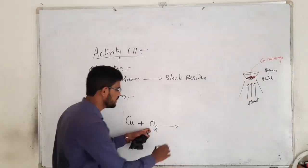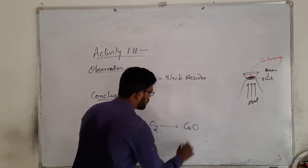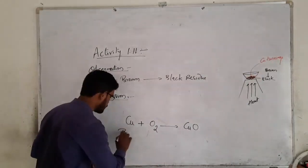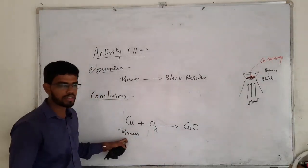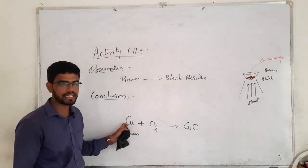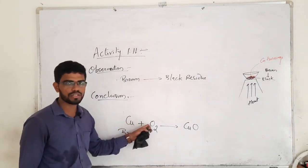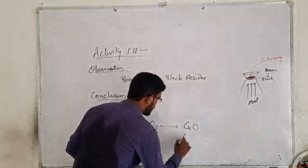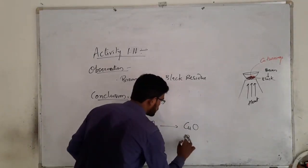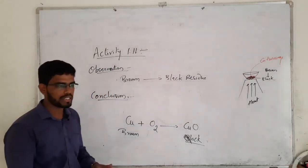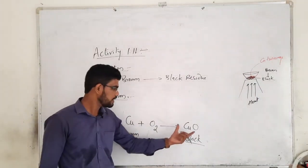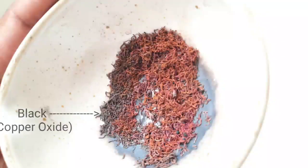What do we get? Copper when combined with oxygen will be giving you copper oxide. The original compound that was there, which is brown in color, was copper. But when we are heating it, it will react with the atmospheric oxygen, and we will be getting that as copper oxide, which is found to be black in color.